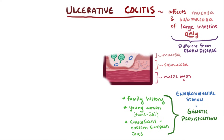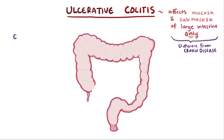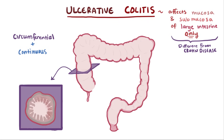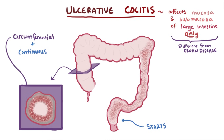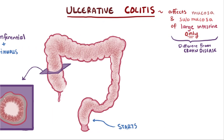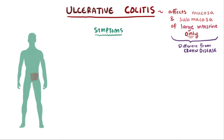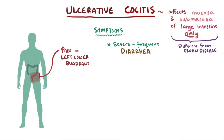With ulcerative colitis, the pattern for ulceration seems to be circumferential and continuous, meaning that the inflammation goes around the whole lumen and starts in the rectum and continues along the large intestine without any apparent breaks of normal or unaffected tissue — like it's working its way from one end to the other. As more damage is done to the tissue, patients experience pain in the left lower quadrant, which corresponds to the rectum, and more severe and frequent bouts of diarrhea, sometimes with blood in the stool as well.